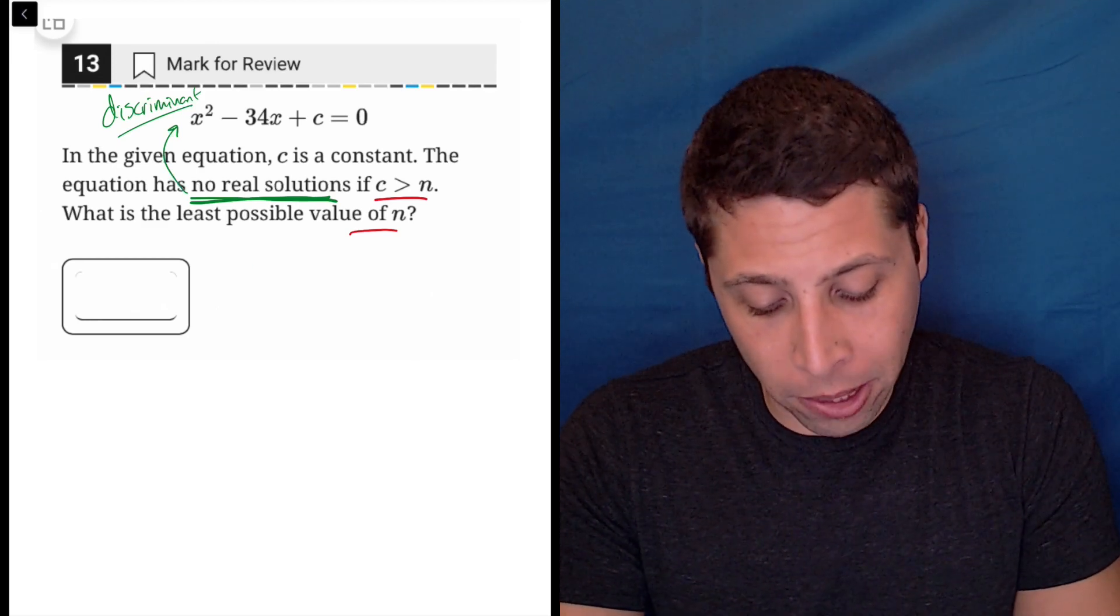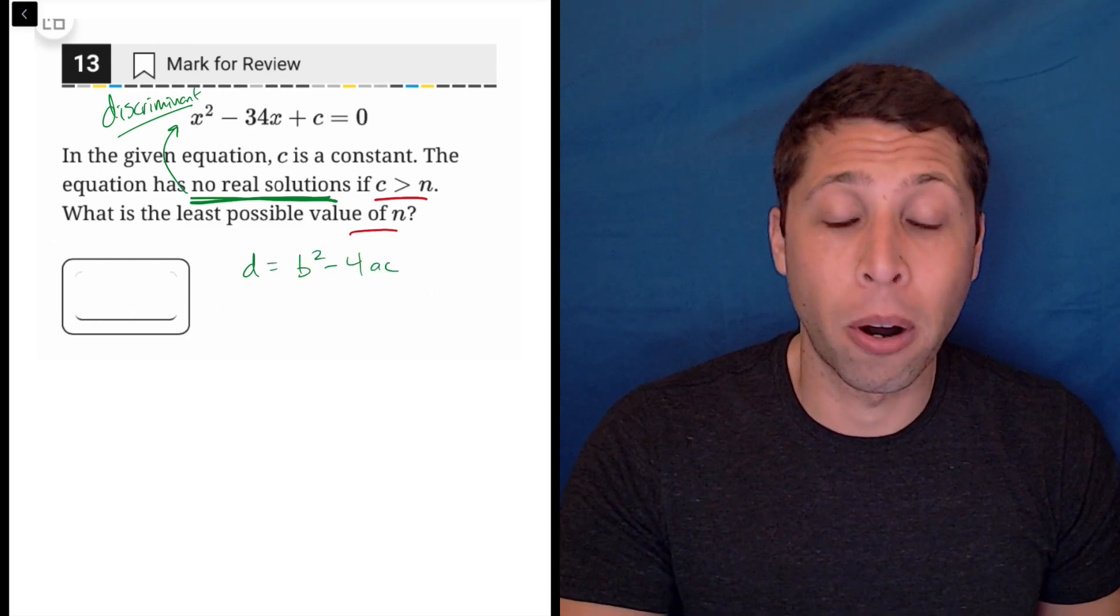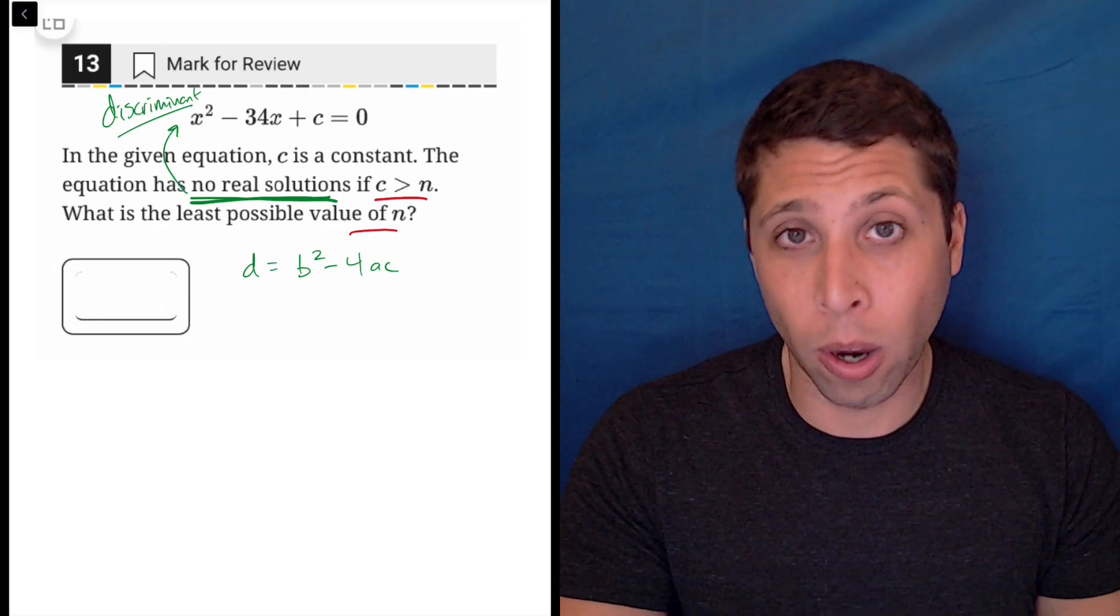So the formula for the discriminant is b squared minus 4ac. Again, you might recognize that. That's the part underneath the radical for your quadratic formula.